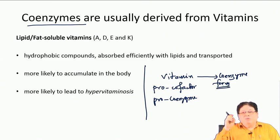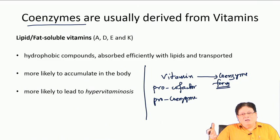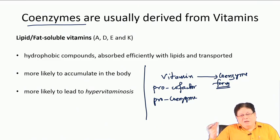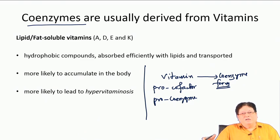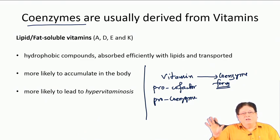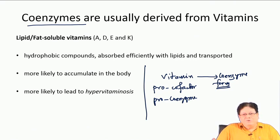Vitamins are pro-coenzymes, and in the body they are converted into another form which is the active coenzyme form — that is the real coenzyme — and that takes part in the reaction, helping the enzyme to catalyze it.